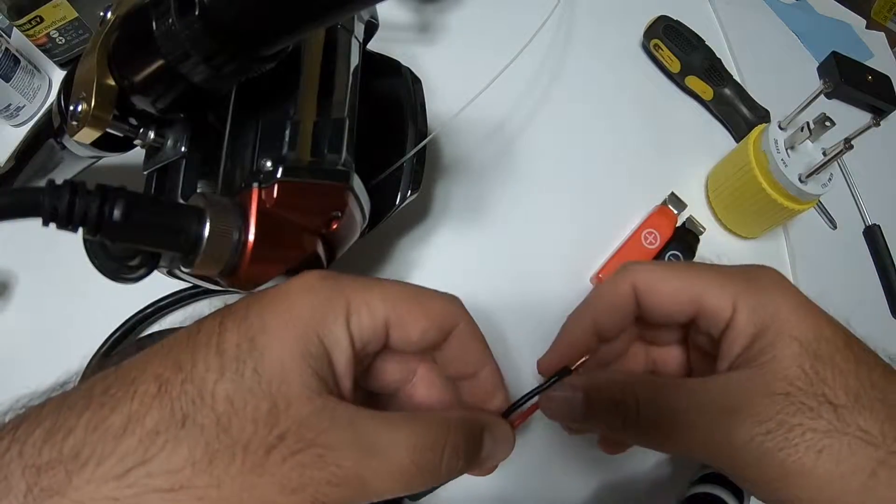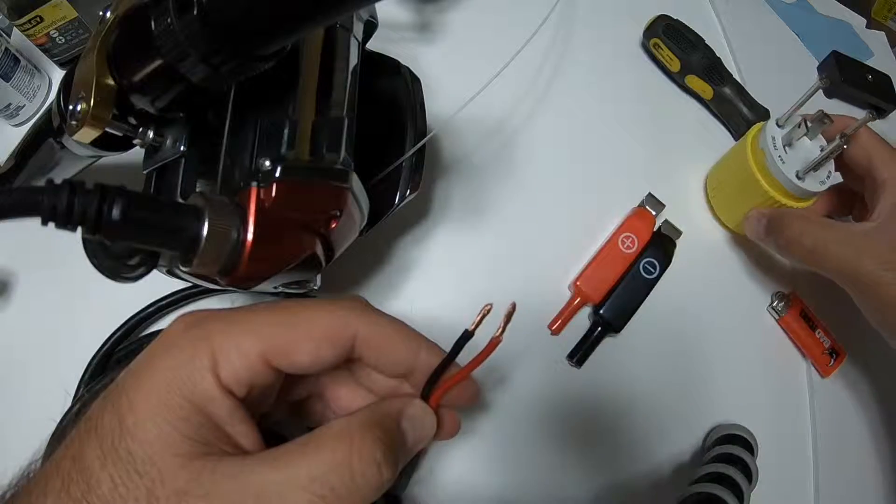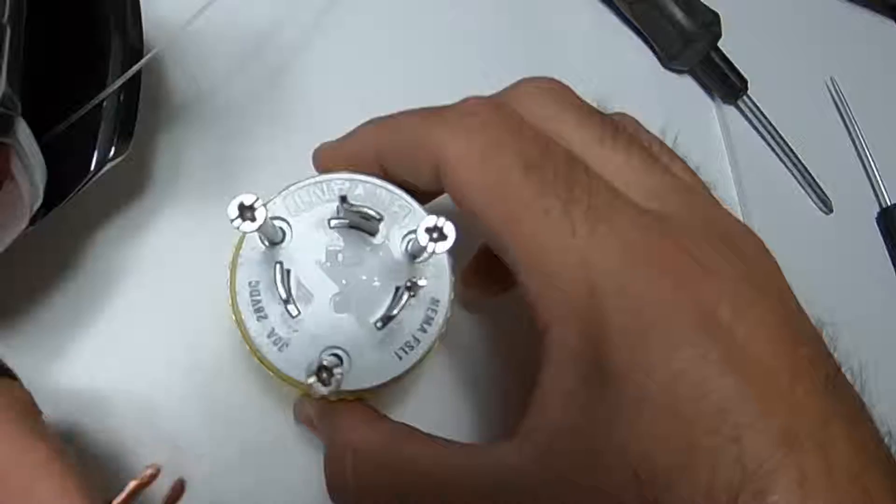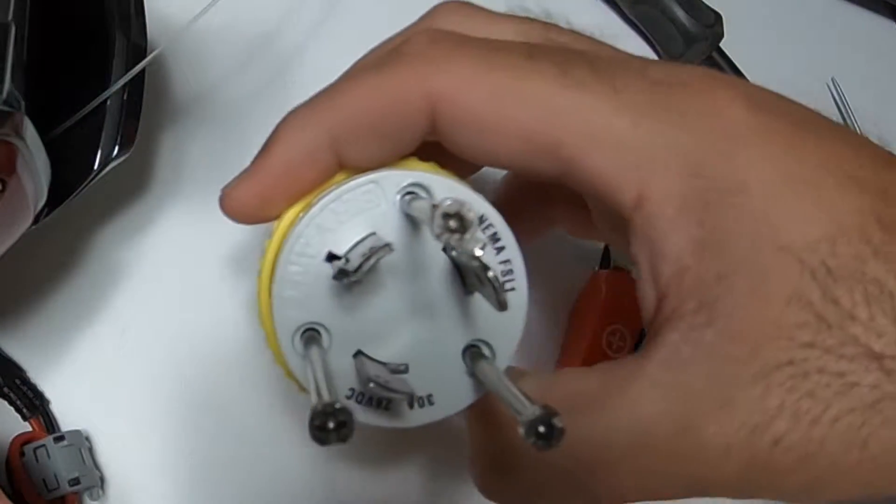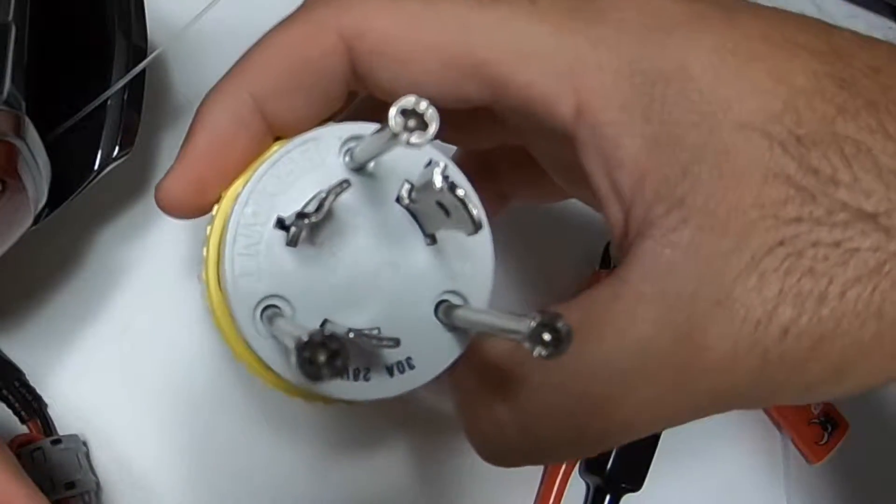It comes with alligator clips. You can see the ones we got going here. I already clipped them off. But we want to rig it to this plug right here. It's a Bryant NEMA FS-L1 30 amp plug.